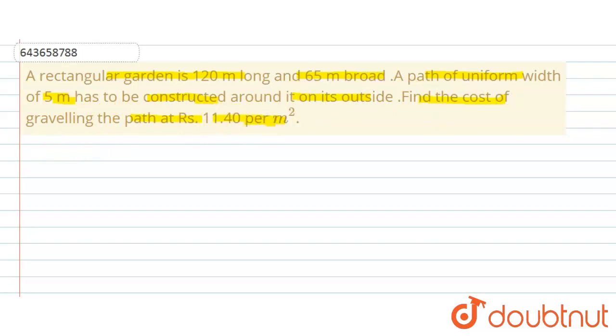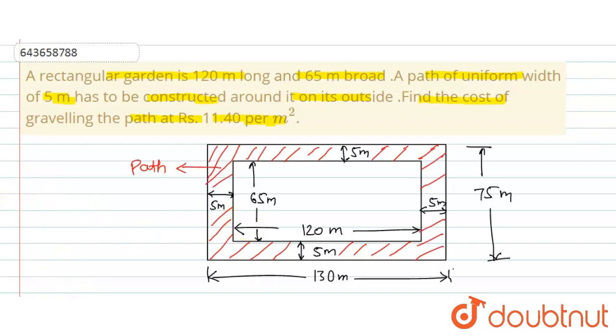Let's draw a figure for this question. This is the inner dimension - length is 120 meters and breadth is 65 meters. The path is around 5 meters in a rectangular form.